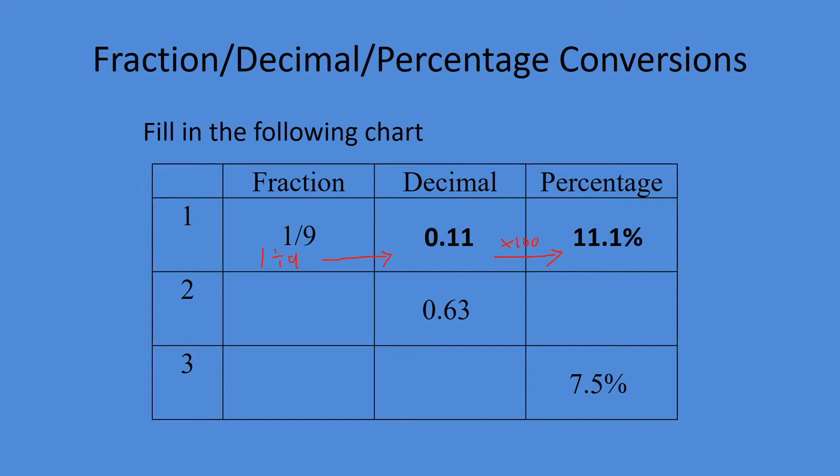0.63, so tens, hundreds. We know our bottom number is going to be a hundred, and we're just going to put 63 on top: 63 over 100. Decimal to percentage: multiply by a hundred, you'll get 63%.